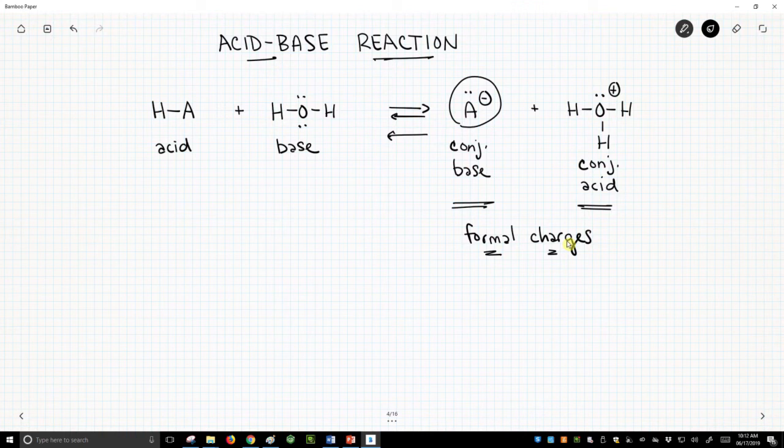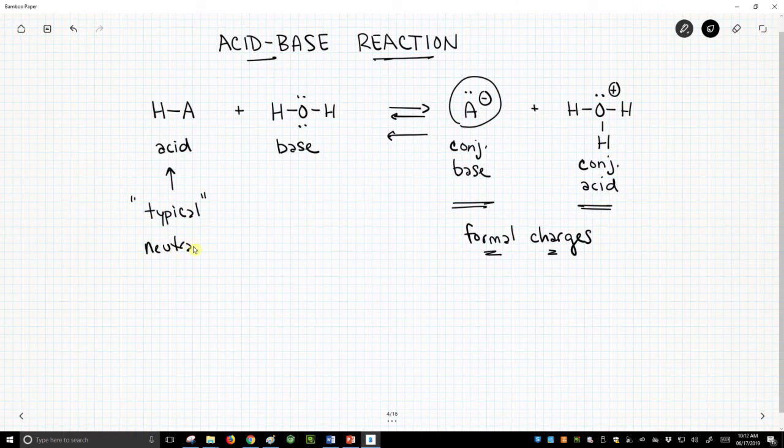Now, the reaction I've shown where we have HA as our acid – this is a typical case where we will have a neutral acid, and therefore we form an anionic conjugate base. So this is the standard case that we will see.